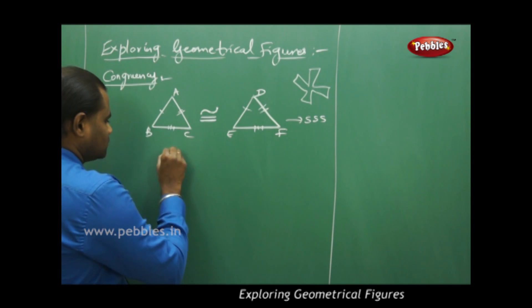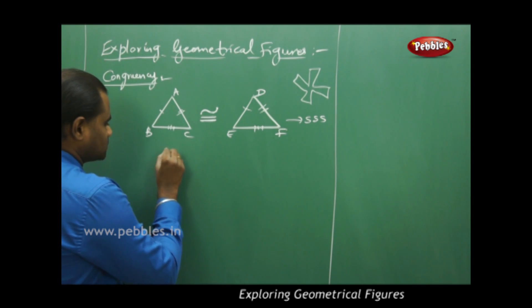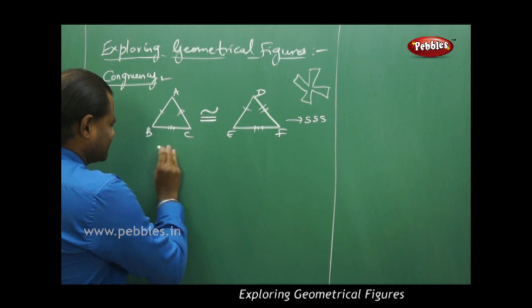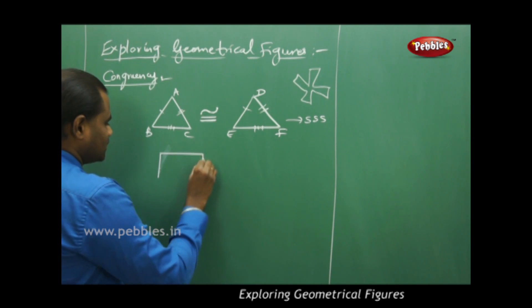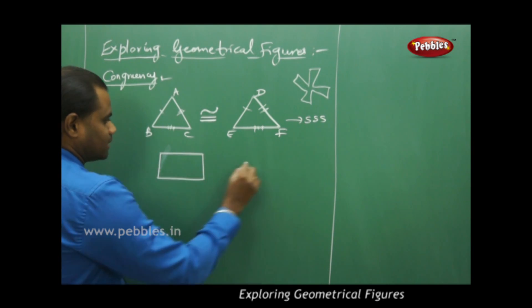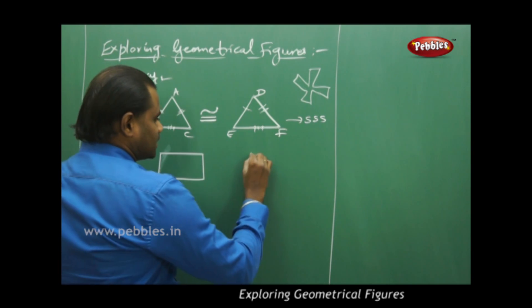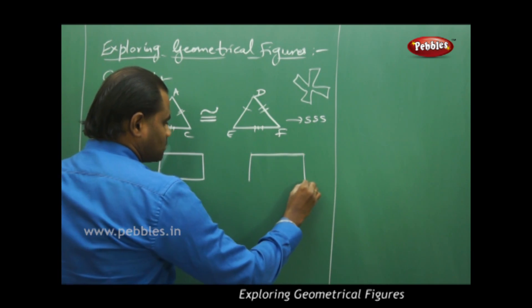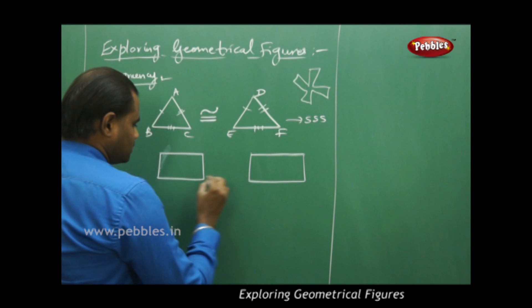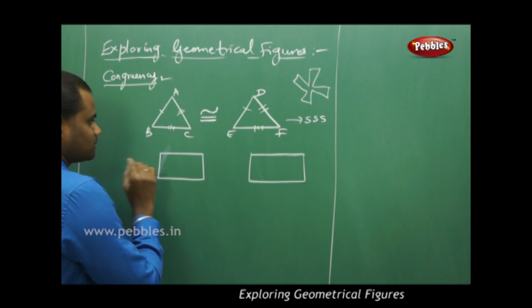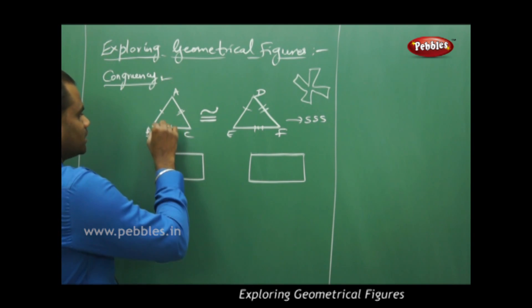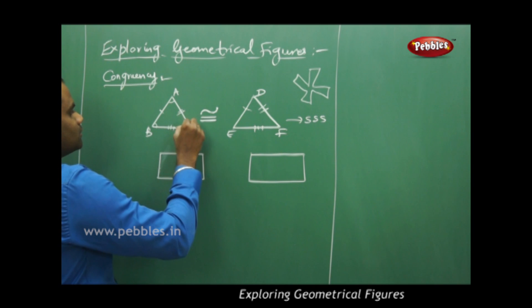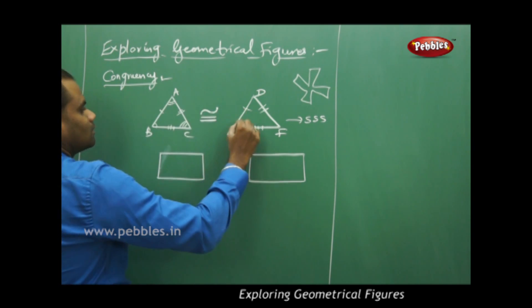Similarly, when I have two parallelograms or two rectangles, I say they are congruent if their corresponding adjacent sides are equal and each of the angles are equal. So in this case, even the angles are said to be equal.